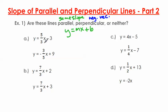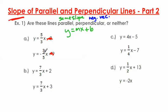The first problem says y equals 5 over 3x minus 3, and y equals negative 3 over 5x plus 9. Remember, when we're talking about parallel and perpendicular lines, we only care about the slope — not the y-intercepts. I'm only looking at the numbers in front of the x. First, I look for parallel: are these slopes the same? Definitely not, so they're not parallel. Now, are these two slopes negative reciprocals of each other? Because if they are, these two lines are perpendicular.